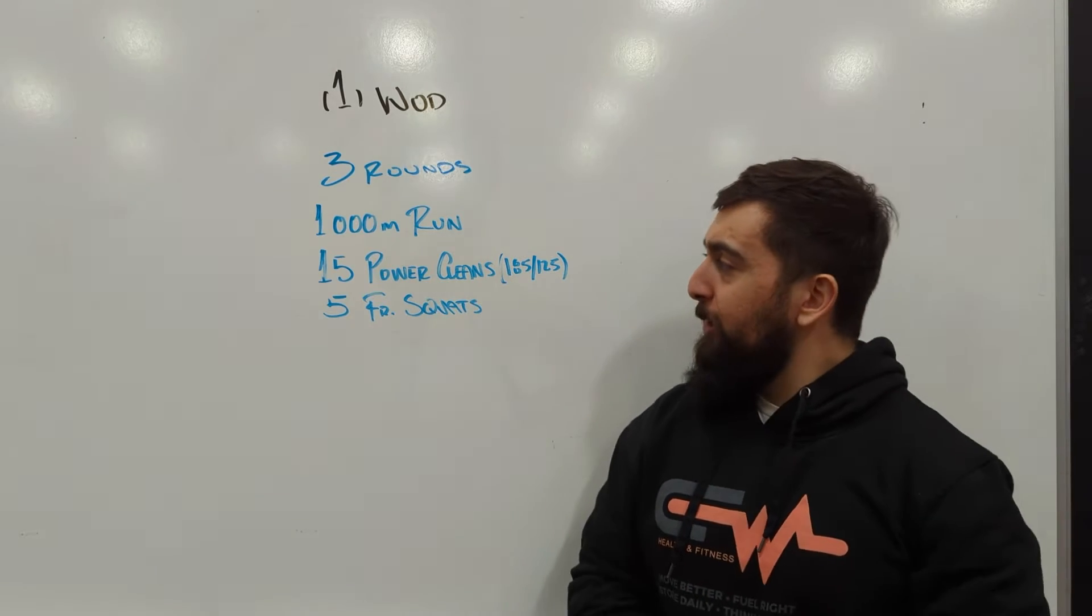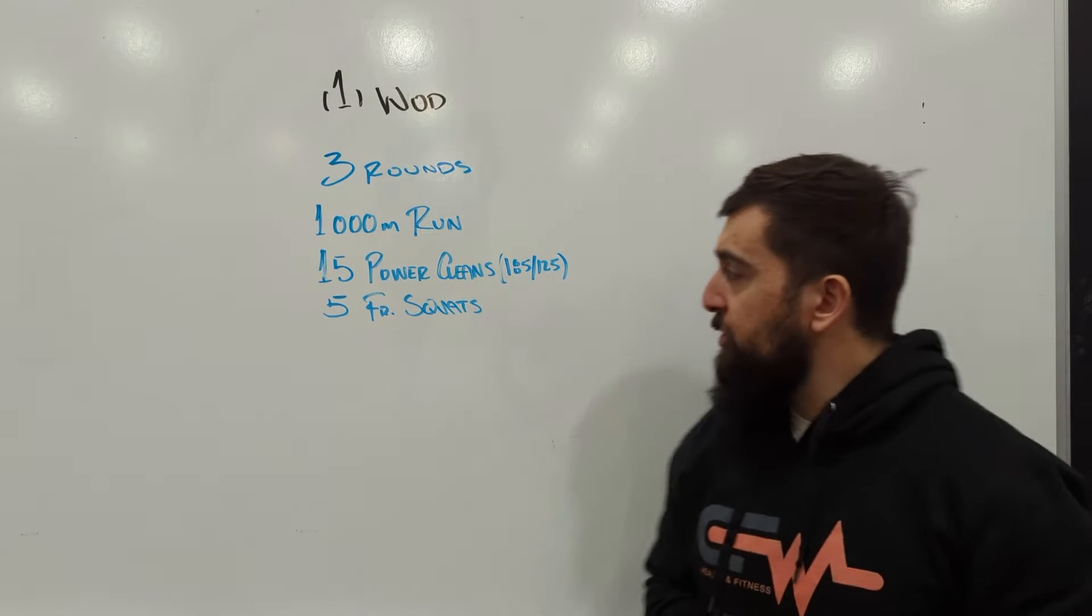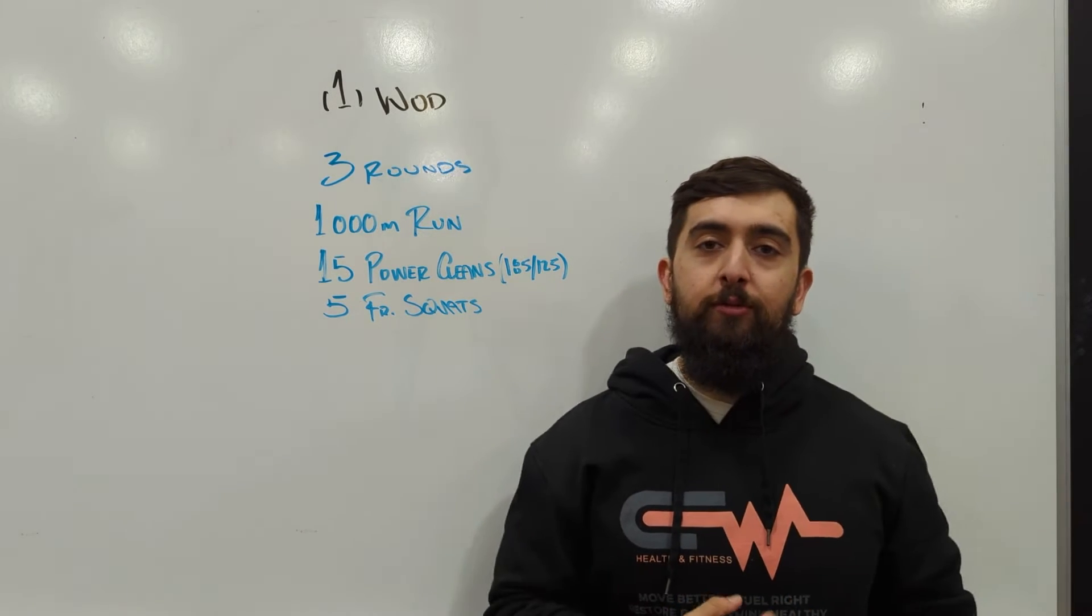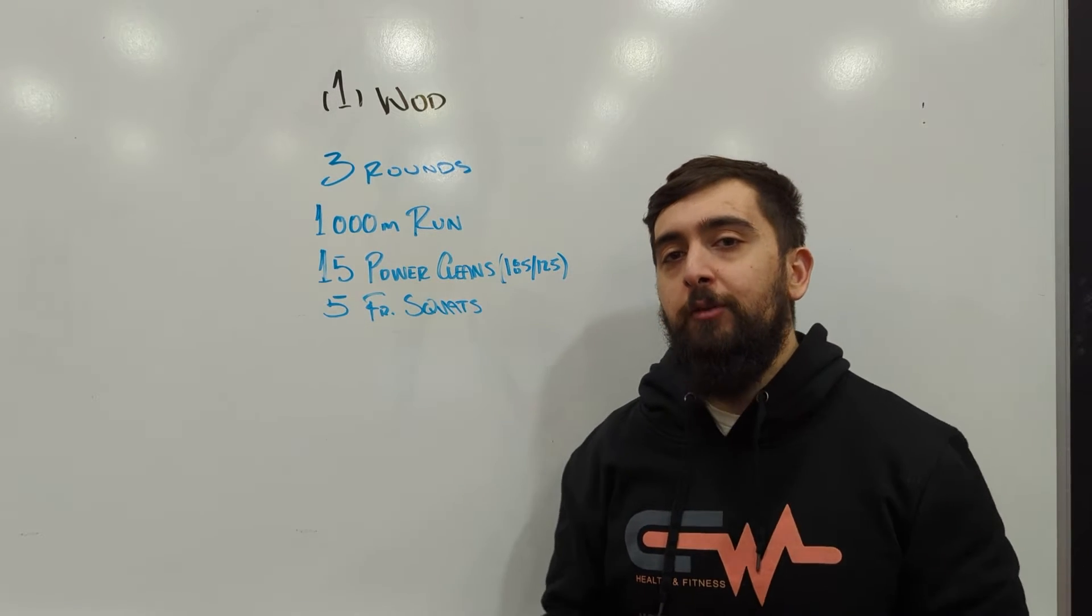So that's 10 laps around the gym and then 15 power cleans at a moderate to heavy weight. So this is 185 for the guys, 125 for the ladies, and then with the same weight we're going to do five front squats to finish off that round.